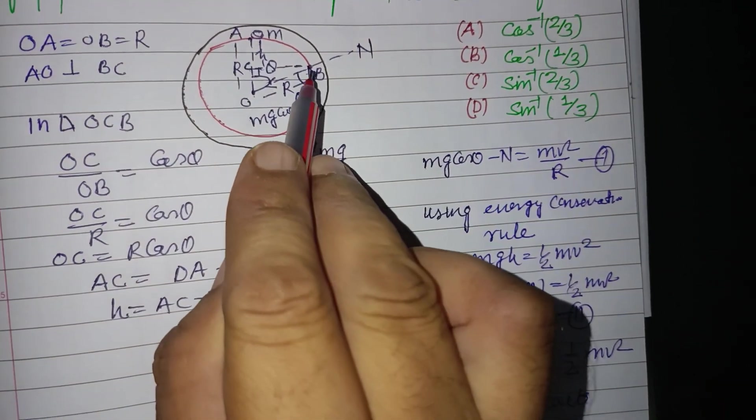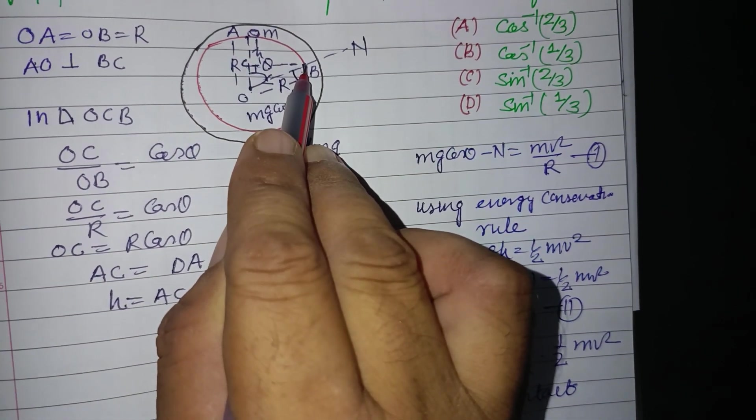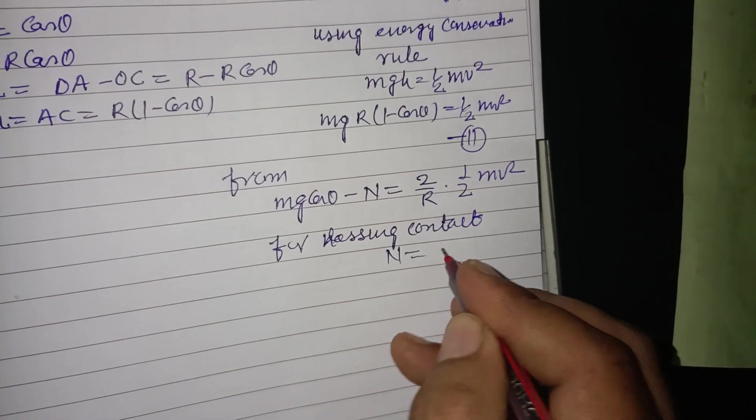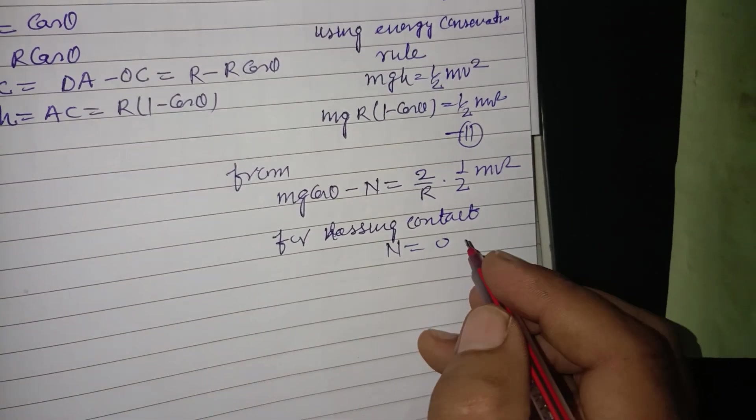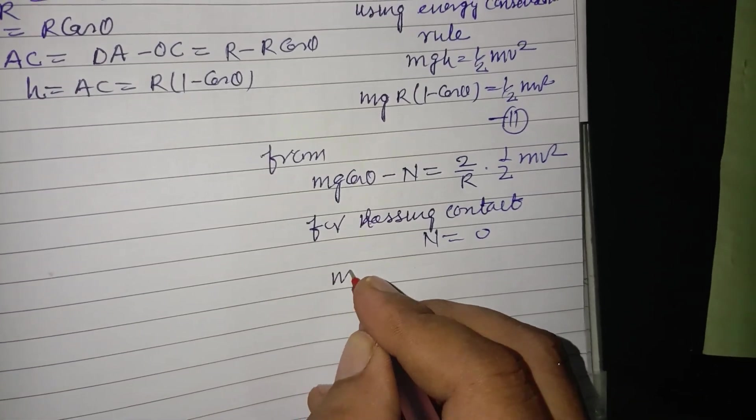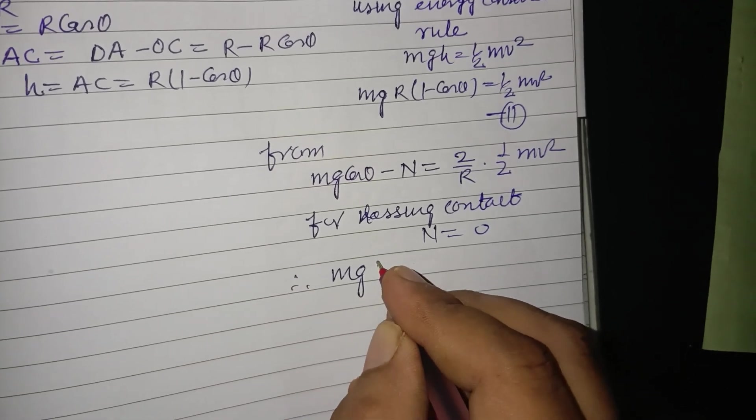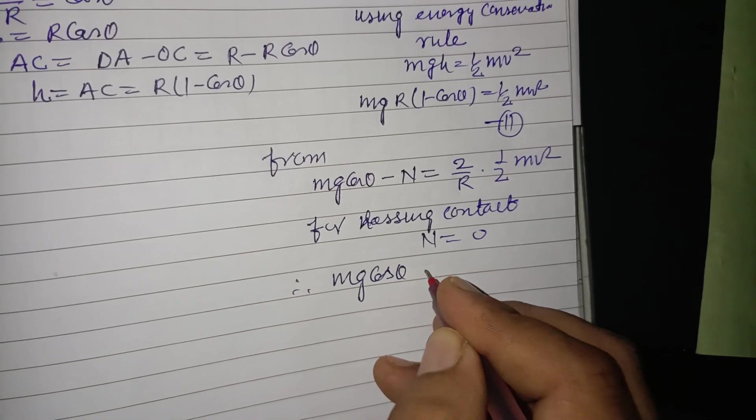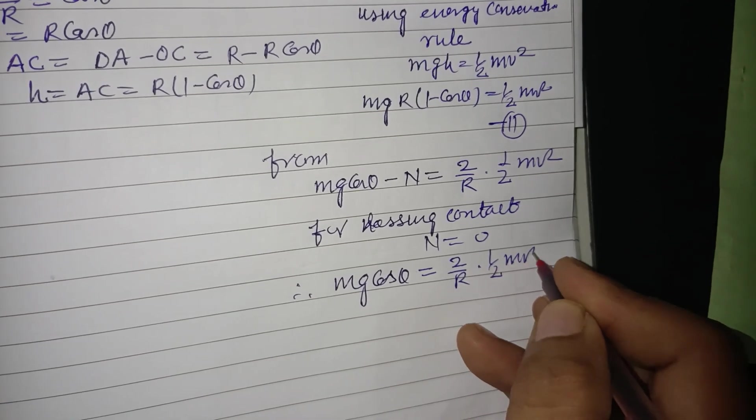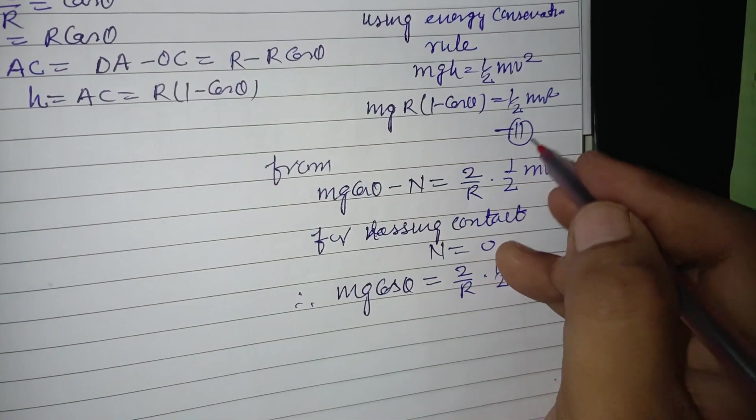A body loses contact when its normal reaction of the plane becomes zero. So when N becomes zero, for losing contact N should be zero. Therefore mg cos theta equals 2 upon R into half m v squared. We put the value of m v squared from the second equation.